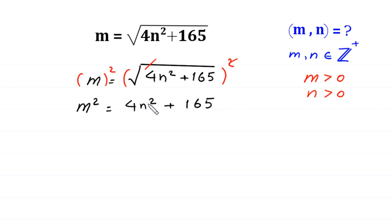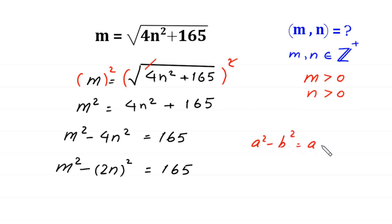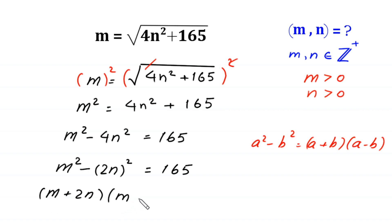We move 4n squared to the left side, giving m squared minus 4n squared is equal to 165. This 4n squared can be written as (2n) squared, so we have m squared minus (2n) squared equals 165. At the left side we have a difference of two squares, so by using the algebraic identity a squared minus b squared equals (a plus b)(a minus b), this becomes (m plus 2n)(m minus 2n) equals 165.